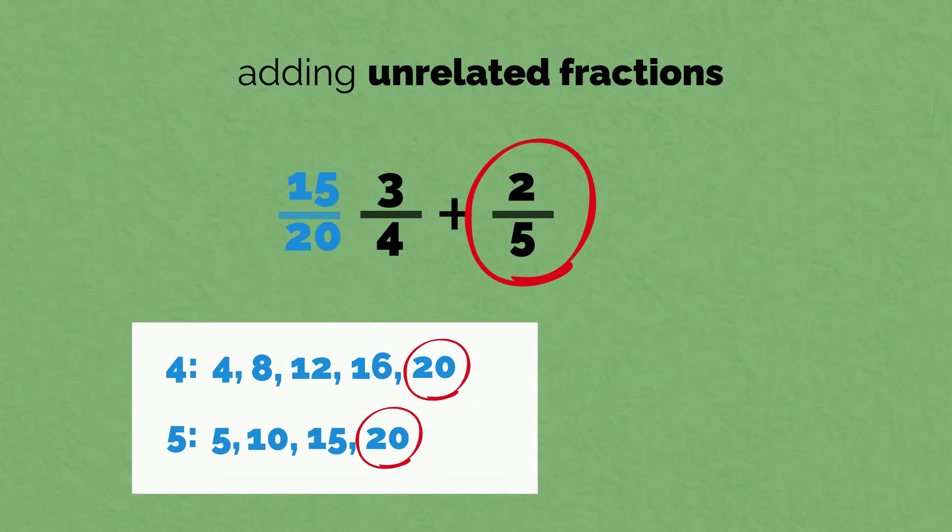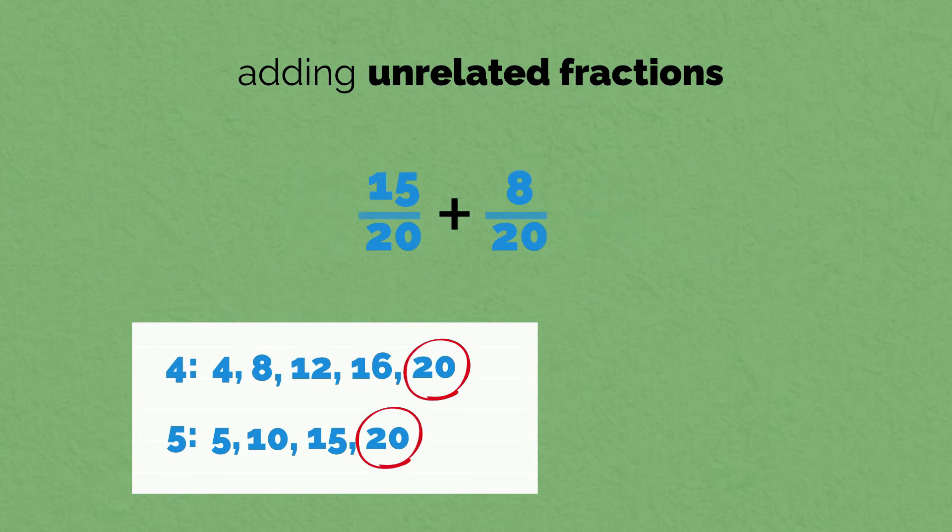Now, for our next fraction. What do we multiply 5 by to get to 20? 4. Now, we do the same to the top number. 2 times 4 equals 8. 15 20ths plus 8 20ths equals 23 20ths.